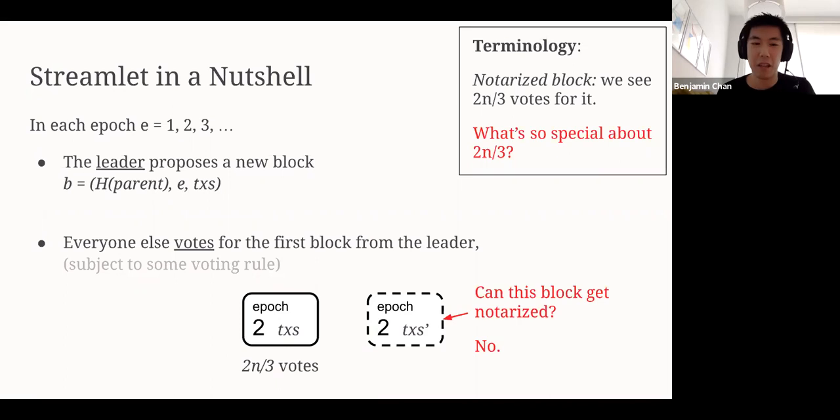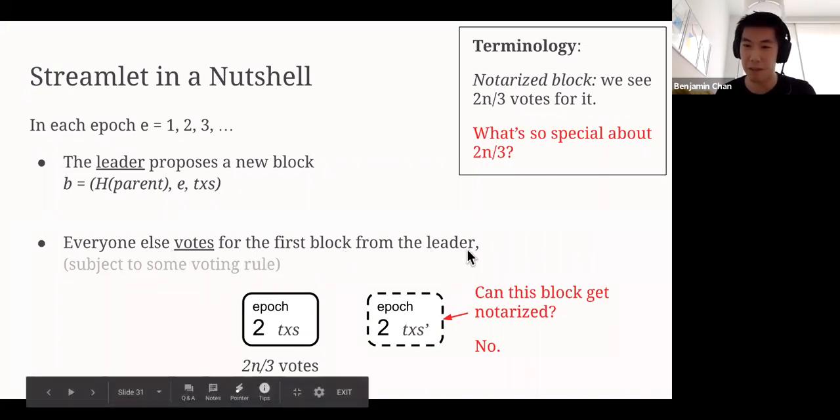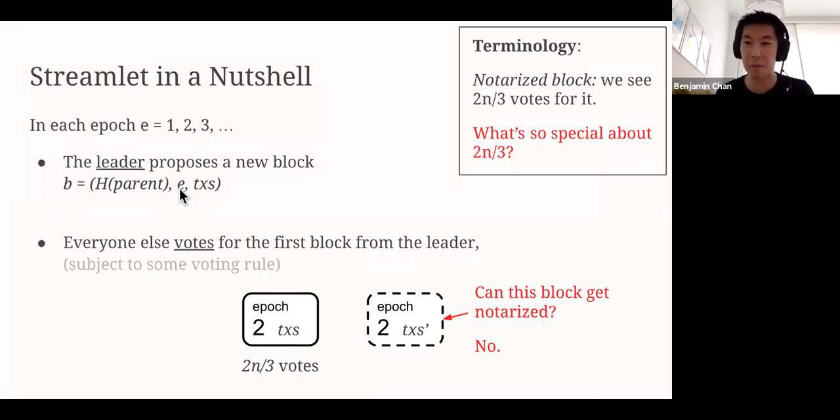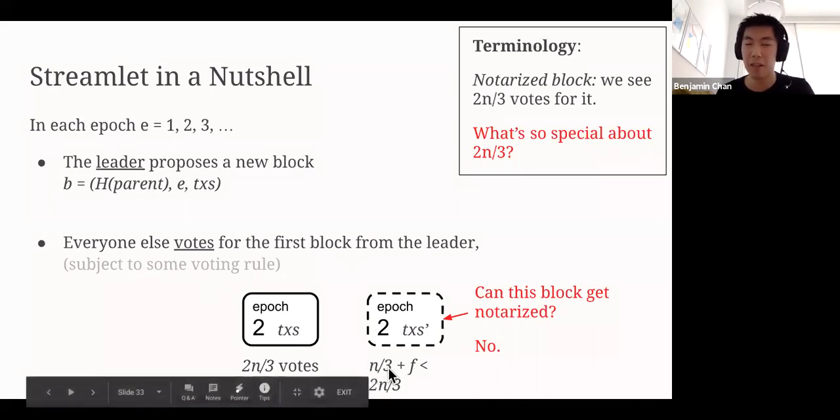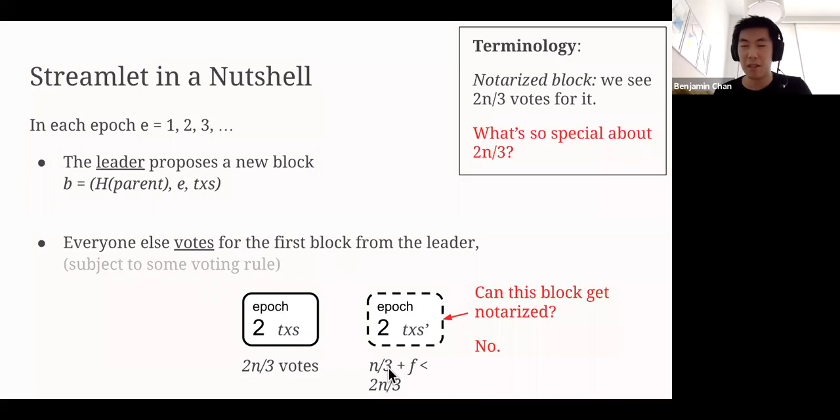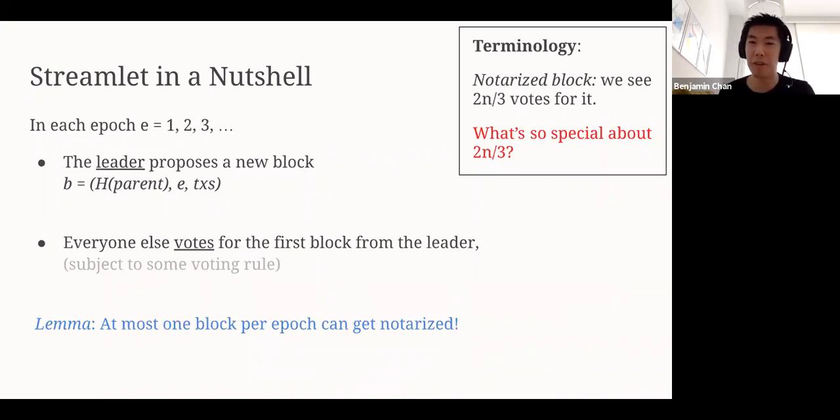Why? Well, there just aren't enough votes to go around. Our first observation is that everyone's only going to vote once per epoch. Everyone only votes for the first block from the leader. Moreover, because blocks contain the epoch number, we know exactly how many times we vote per epoch. Every honest player is only going to vote once. Really, the argument is that the number of honest votes left over n over three plus the number of malicious votes is less than two n over three. So, this block on the right simply cannot get notarized. Our lemma is that at most one block per epoch can get notarized. It's actually quite nice, and that's the reason why we work with notarized blocks and notarized chains for the remainder of the protocol. A notarized chain is just a chain of blocks in which every block is notarized.